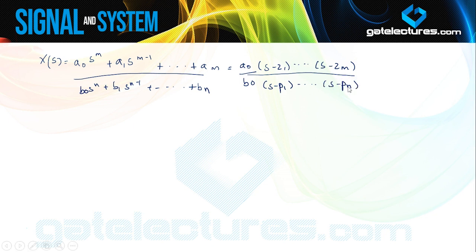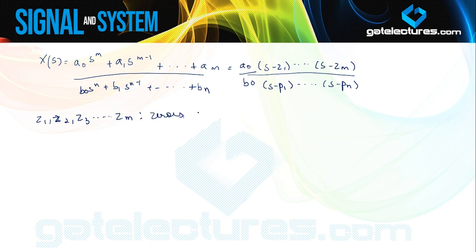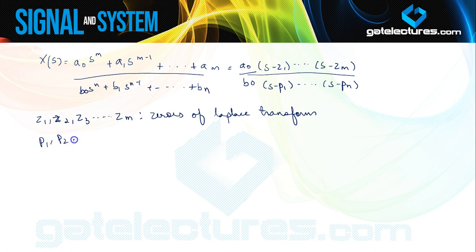I can write this conveniently as (a₀/b₀) times (s − z₁)… expressing the denominator and numerator in terms of factors. The factors of the numerator — z₁, z₂, z₃ — roots of the numerator are known as zeros of the Laplace transform. And the roots of the denominator — p₁, p₂, p₃ till pₙ — are known as poles of the Laplace transform.